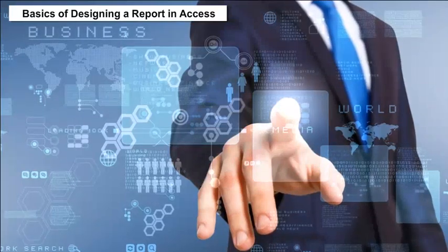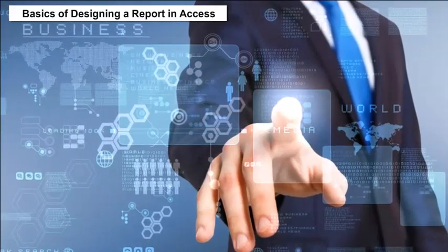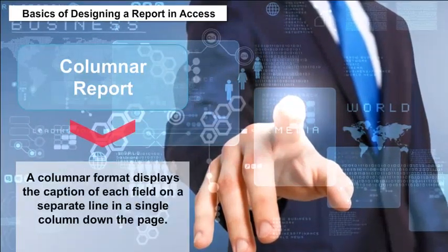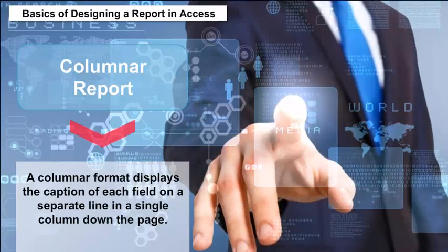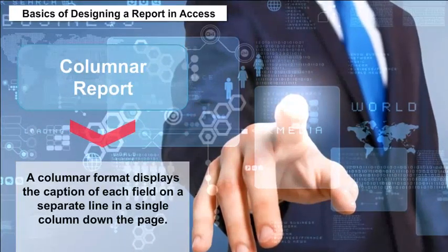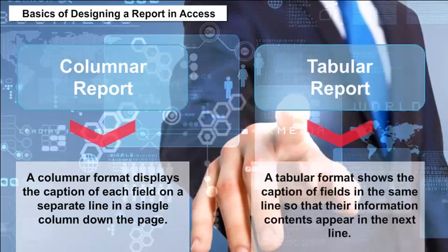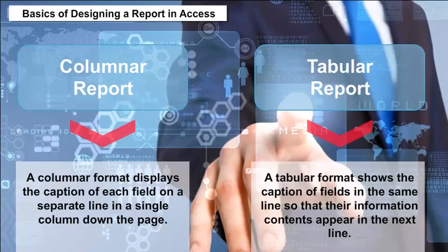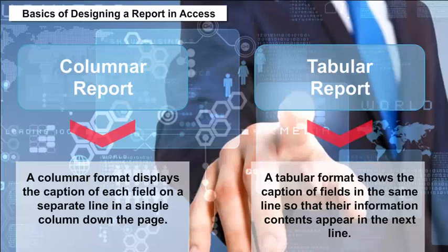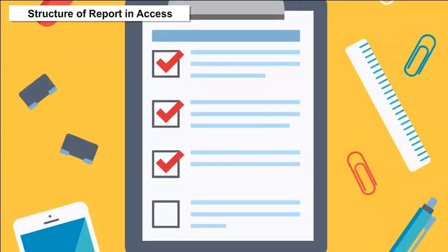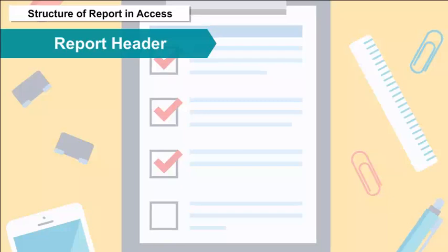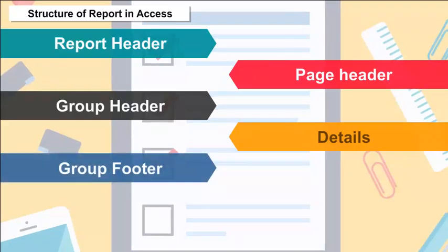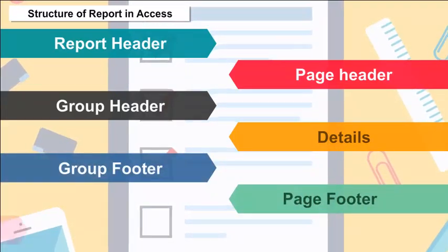Basics of designing a report in Access: There are two formats — Columnar Report (displays the caption of each field on a separate line in a single column down the page) and Tabular Report (shows the caption of fields in the same line so information appears in the next line). Structure of a report in Access: Report Header, Page Header, Group Header, Details, Group Footer, Page Footer, and Report Footer.